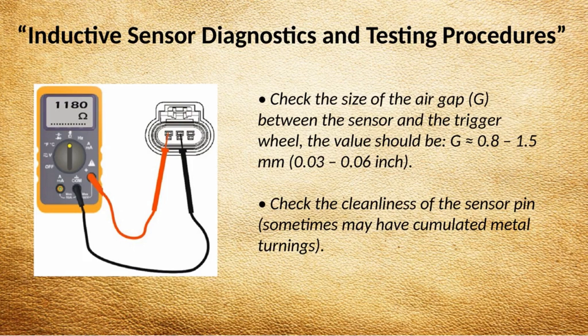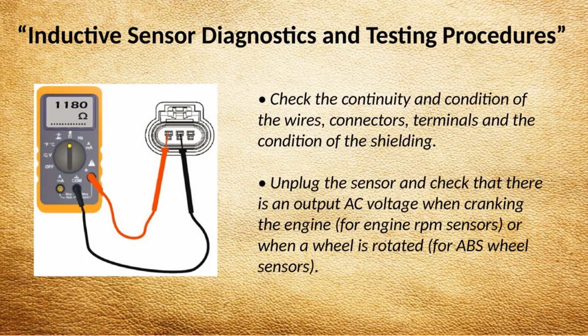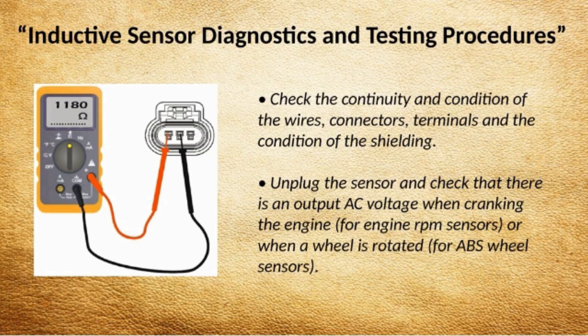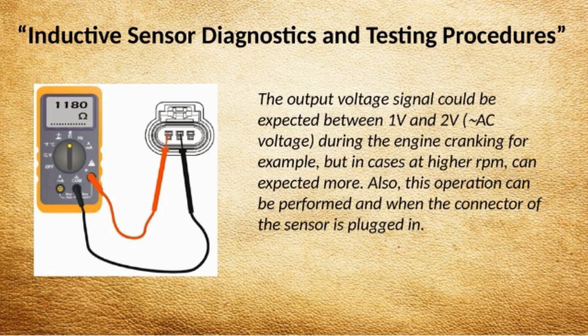Check the size of the air gap G between the sensor and the trigger wheel — the value should be G: 0.8 to 1.5 mm (0.03 to 0.06 inch). Check the cleanliness of the sensor pin, as it sometimes may have accumulated metal turnings. Check the continuity and condition of the wires, connectors, terminals, and the condition of the shielding. Unplug the sensor and check that there is an output AC voltage when cranking the engine for engine RPM sensors, or when a wheel is rotated for ABS wheel sensors. The output voltage signal could be expected between 1 volt and 2 volts during engine cranking, but at higher RPM can expect more. This operation can also be performed when the connector of the sensor is plugged in.